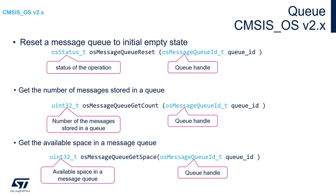There are additional utility functions worth knowing. To reset a message queue to its initial empty state, execute osMessageQueueReset with the queue handle as the argument, returning the classic osStatus_t. To get the number of messages currently stored in the queue, call osMessageQueueGetCount with the queue handle. To get the available space in the queue, use osMessageQueueGetSpace — also taking only the queue handle — which is useful when you need more control over a queue shared by many tasks.